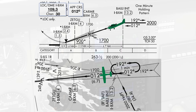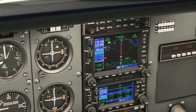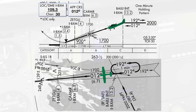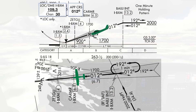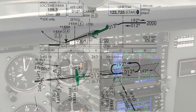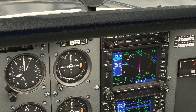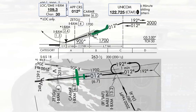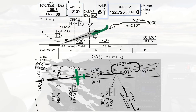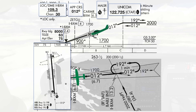The localizer frequency is 109.3, so we'll make sure we have that dialed into NAV1 and identified. We'll also set the OBS to the inbound course of 012. From Bailey, we'll descend to 1,700 feet — the glide slope intercept altitude. We'll pick up the glide slope from around Karma. Around that time, we'd expect Approach to approve our frequency change to CTAF, which we can put into COM1 standby on 122.72. We would then descend on the approach to the decision altitude at 263 feet, continuing on a 3-degree glide slope to the runway. We should be able to see the medium intensity approach lights and the runway environment to land on the 8,000-foot runway 1 right, at a touchdown elevation of 63 feet.